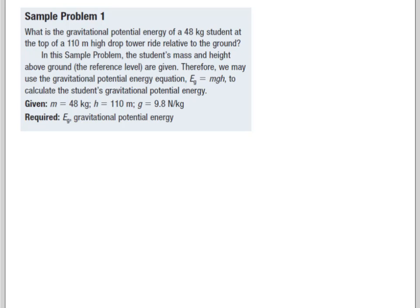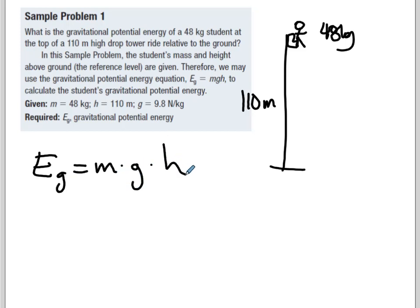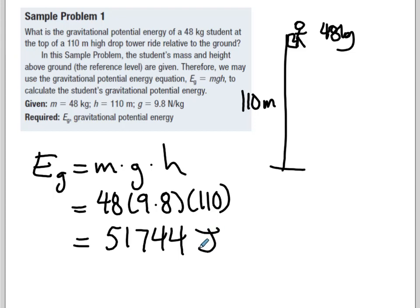All right, so what is the gravitational potential energy of a 48 kilogram student at the top of a 110 meter high drop tower? So you have some sort of drop tower, that's 110 meters, you have some sort of chair with a student in it, that is 48 kilograms. So we are asked for, find Eg, the gravitational potential energy, so Eg equals mass times g times height, or d, doesn't matter. So we have 48 times 9.8 times 110, so let's go to our calculator and let it do all the heavy lifting. So we have 51,744 joules of potential energy.